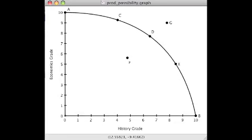This is what we call a production possibility curve. Let's look at each of the two axes. The vertical axis is an economics grade. Let's imagine you're taking two classes, economics and history, and if you devoted all of your available study time to economics, you could get a grade of 10, something quite high.